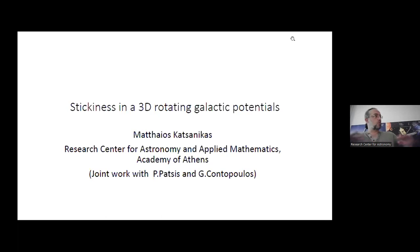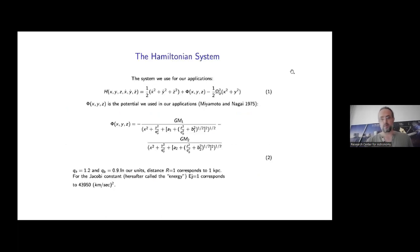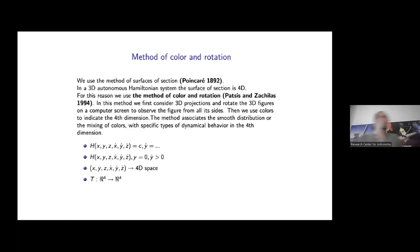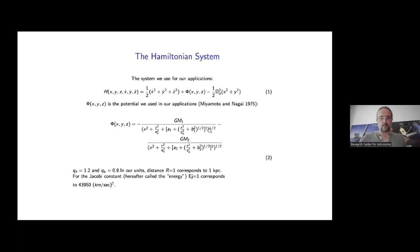Until now the study was restricted only to the equatorial plane of these 3D systems. The system we use is described by a Hamiltonian whose potential in asymmetric form represents the potential of the Milky Way. We introduce parameters 2a and 2b that determine the geometry of the disk. This is the known Miyamoto-Nagai potential of 1975, and in asymmetric form it corresponds to 2a and 2b equal to 1.